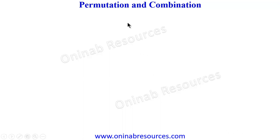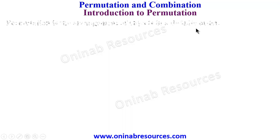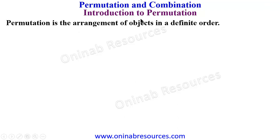Hello out there, welcome to this tutorial on permutation and combination. In this video we'll be looking at an introduction to permutation. Permutation is the arrangement of objects in a definite order — that is to say, the position of the objects are important in this arrangement. This definite order is the key phrase we need in permutation.